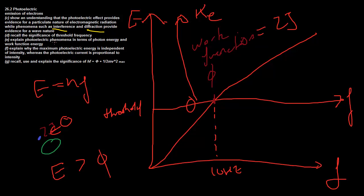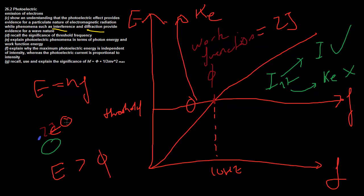Now let's look at why the maximum photoelectric energy is independent of intensity, whereas the photoelectric current is proportional to intensity. Intensity does affect the current or the rate at which electrons are emitted, but does not affect the kinetic energy. This is because it's one photon, one electron. If you have more photons, each electron still only gets the energy of one photon — they interact one at a time. So that photon's energy is only dependent on frequency, which is why kinetic energy does not vary with intensity.